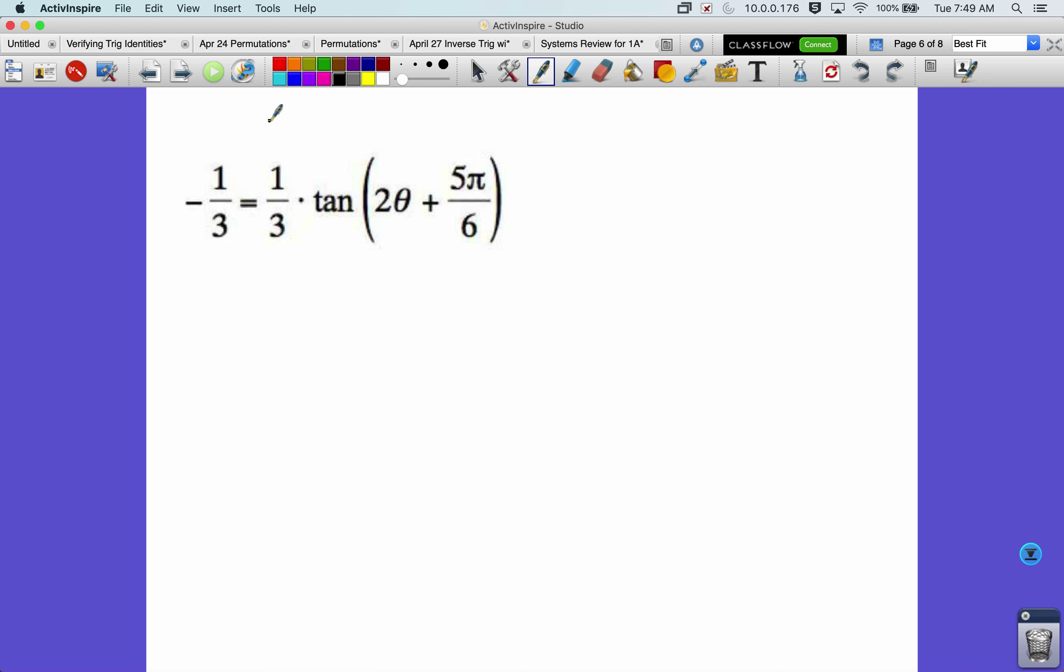So, what we need to do is isolate this tangent, solve, but then we're not going to be done. We've got to keep going with getting rid of these operations. The five pi over six and the two. And this here gives us the hint that we should work in radians. All right, this is a very radian-friendly measure. So, we're going to multiply three to both sides. Negative one equals the tangent of two theta plus five pi over six.